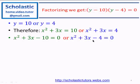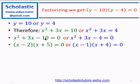For x² + 3x - 10 = 0: since 2 × 5 = 10 and -2 + 5 = 3, the factors are (x - 2)(x + 5) = 0. For x² + 3x - 4 = 0: since 4 × 1 = 4 and 4 - 1 = 3, the factors are (x + 4)(x - 1) = 0.